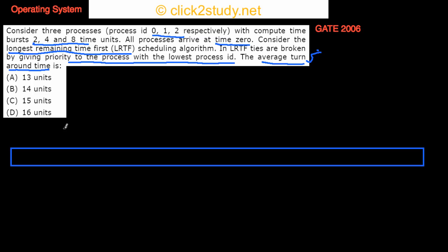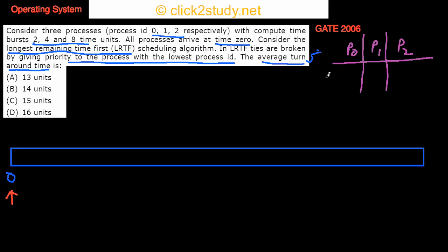All three processes arrive at time zero. I'm writing them as P0, P1, and P2. Their IDs are 0, 1, and 2. The CPU burst times are: P0 needs 2 time units, P1 needs 4 time units, and P2 needs 8 time units. These remaining times will change as processes execute, and accordingly each process will get priority.